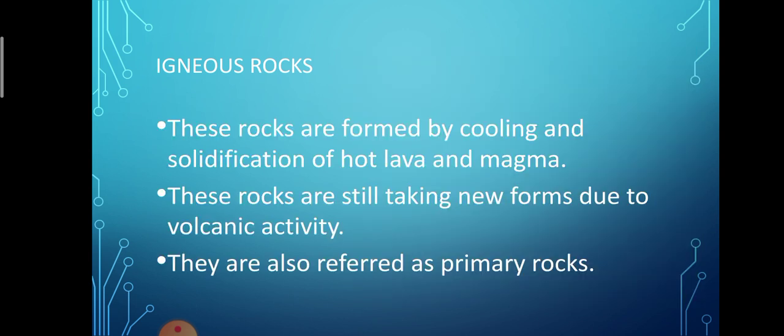Igneous rocks are formed by cooling and solidification of hot lava and magma. These rocks are still taking new forms due to volcanic activity, and since they were the first to be formed, they are also referred to as primary rocks. The lithosphere originally comprised primary or igneous rocks, but due to internal and external processes, many of these were transformed into sedimentary and metamorphic rocks.